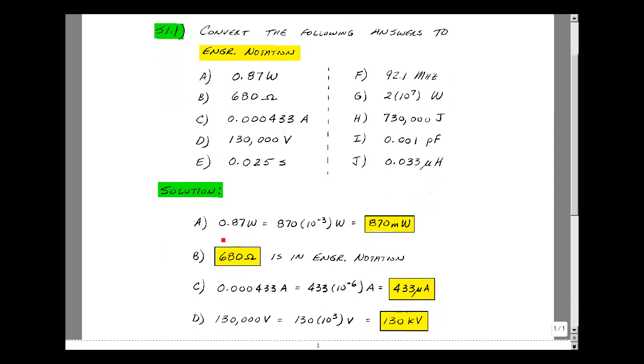We want to take this number and put it between 1 and 1,000 with the appropriate prefix. Let's move the decimal point over three places. We get 870 times 10 to the minus 3, and 10 to the minus 3 is milli. That's 870 milliwatts. 680 ohms is between 1 and 1,000, and so it is in engineering notation already.